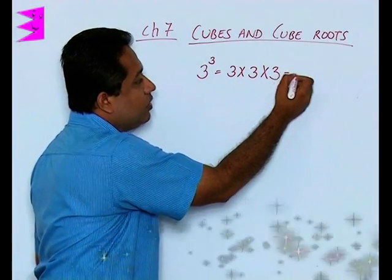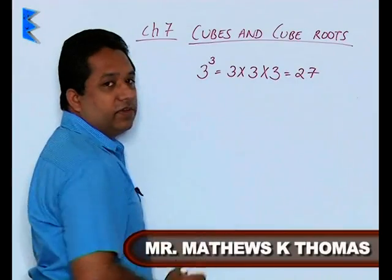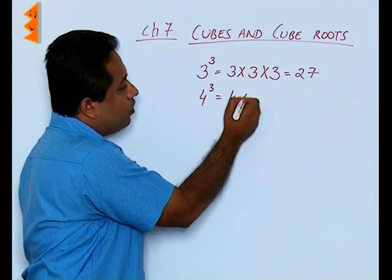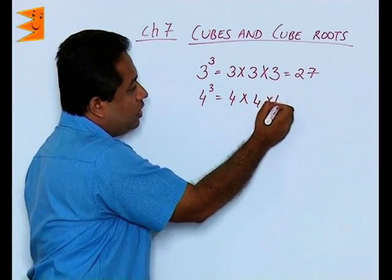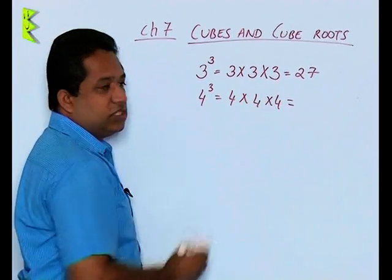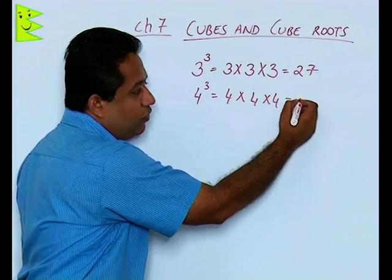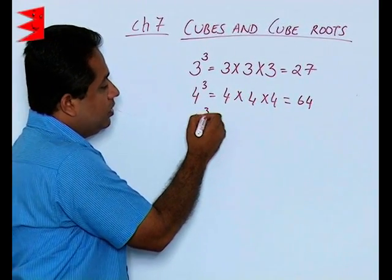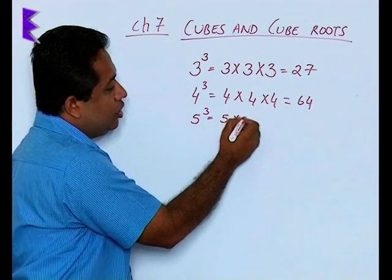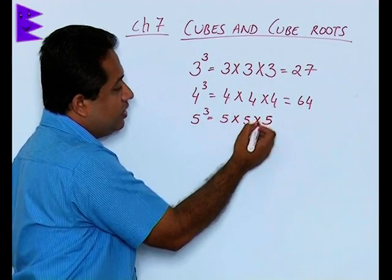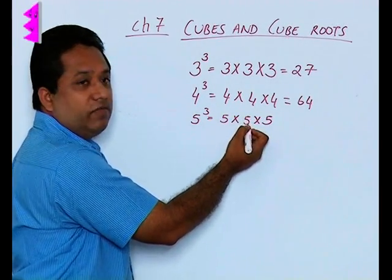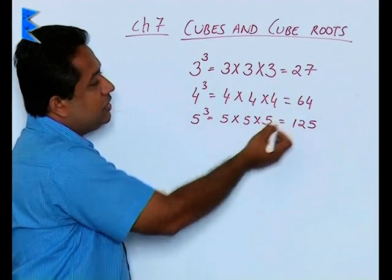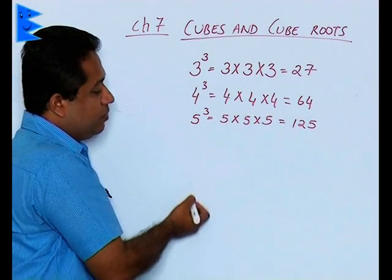4 cube similarly will be 4 into 4 into 4. So 4 into 4 is 16, and 16 into 4 we get 64. 5 cube will be 5 into 5 into 5, that is 5 into 5 is 25, 25 into 5 is 125.